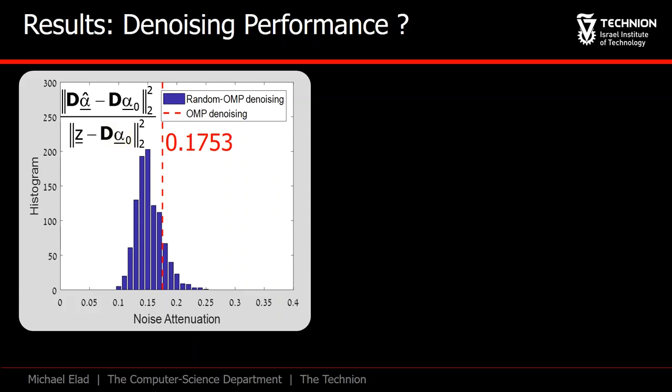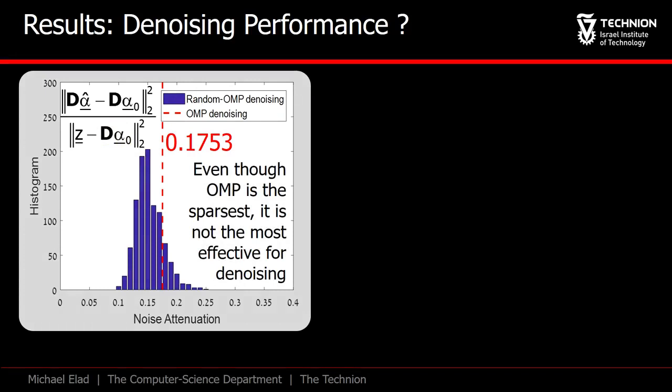Observe that OMP gave a ratio of 0.17, which is not bad at all, but many of the alternative solutions got a better ratio, even 0.1.